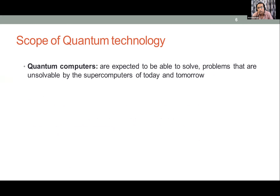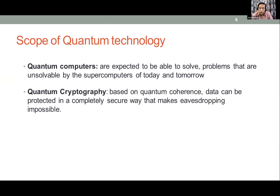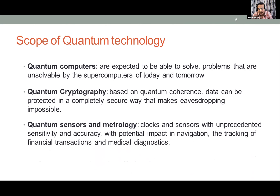Quantum computers are expected to solve problems that are unsolvable by supercomputers today and tomorrow. Quantum cryptography, based on quantum coherence, can protect data in a completely secure way that makes eavesdropping impossible. Quantum sensors and metrology — using trapped ions or any quantum system — allow us to make very precise clocks and sensors, including magnetic field sensors, electric field sensors, and gravity sensors with unprecedented sensitivity and accuracy.